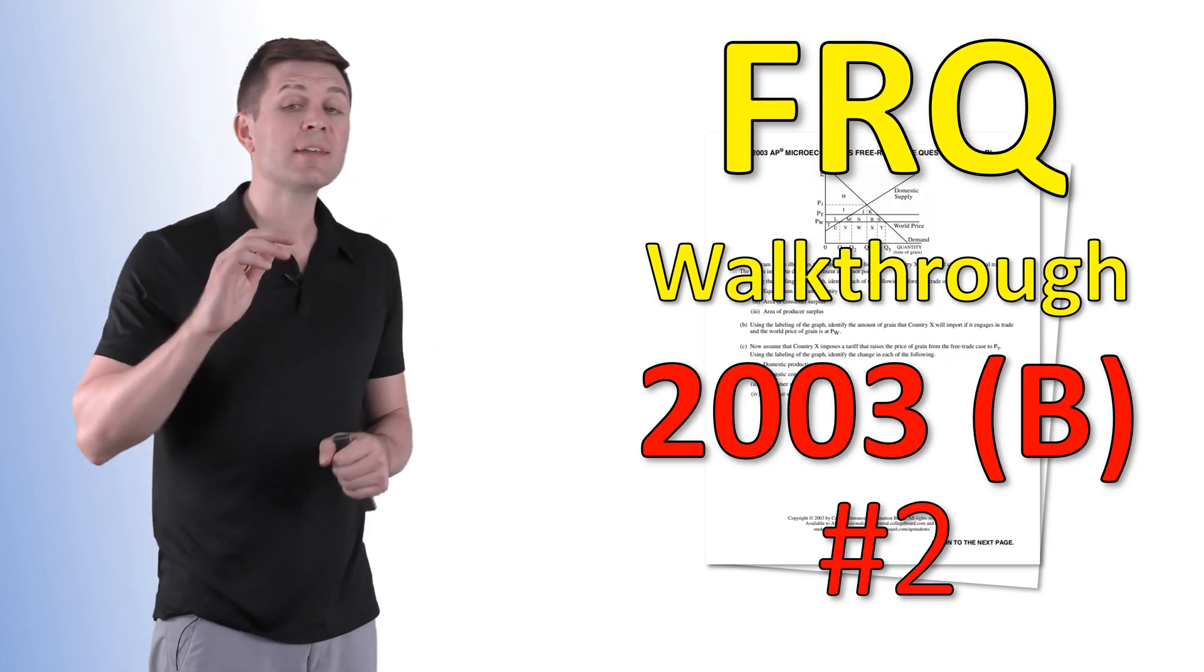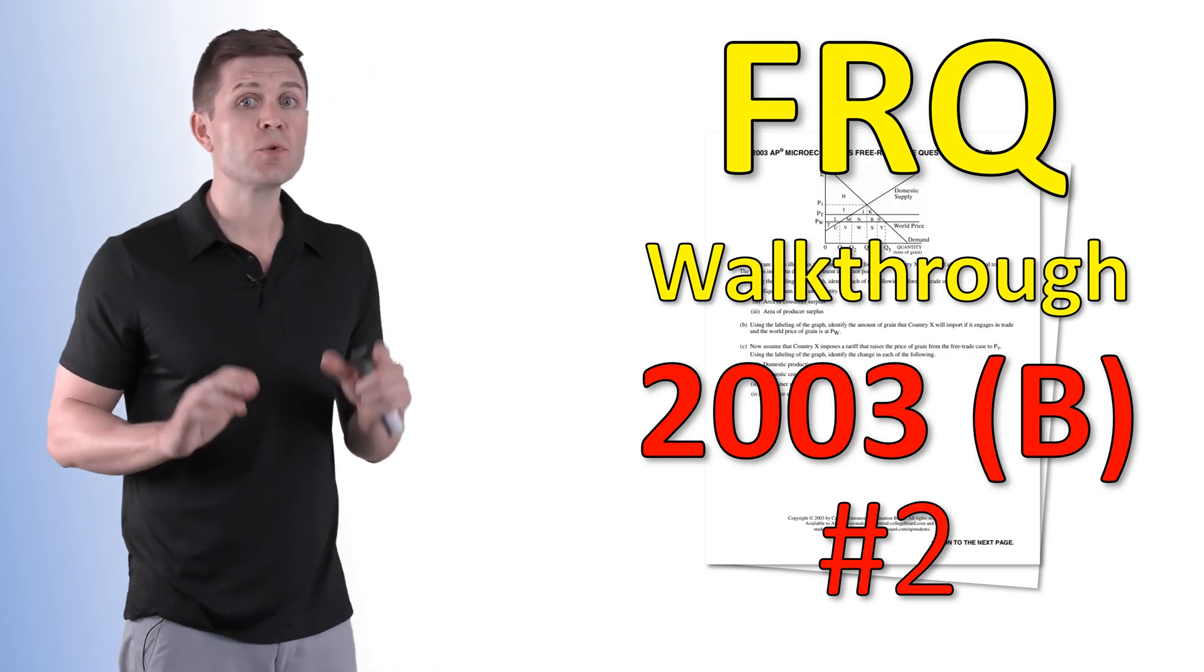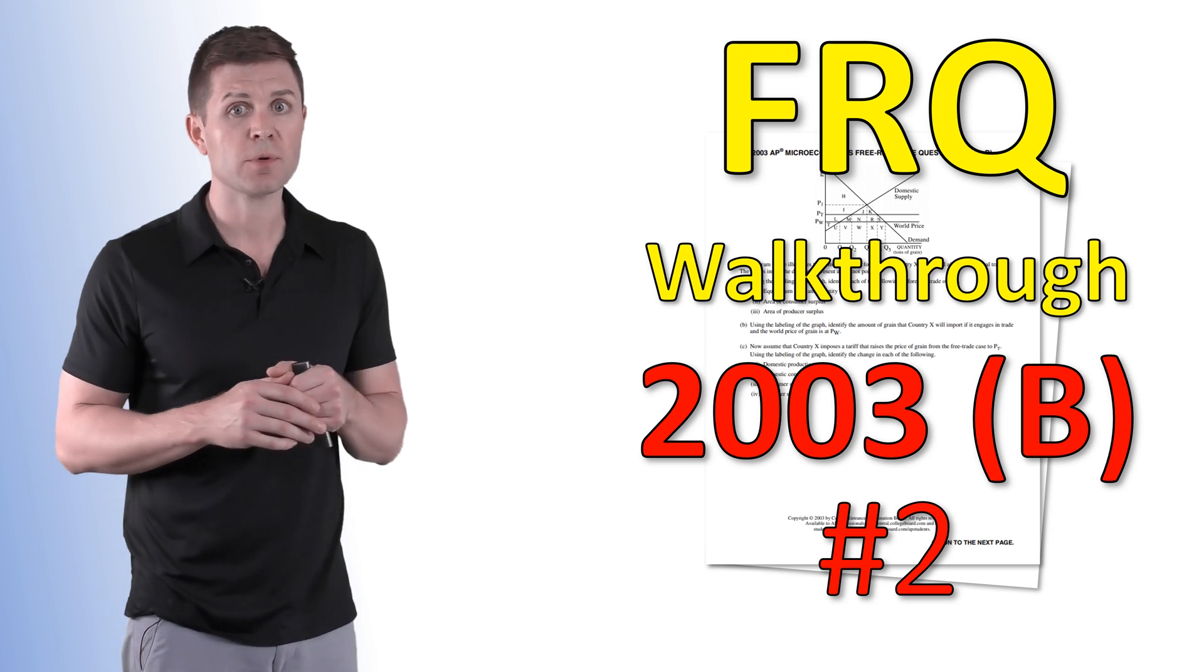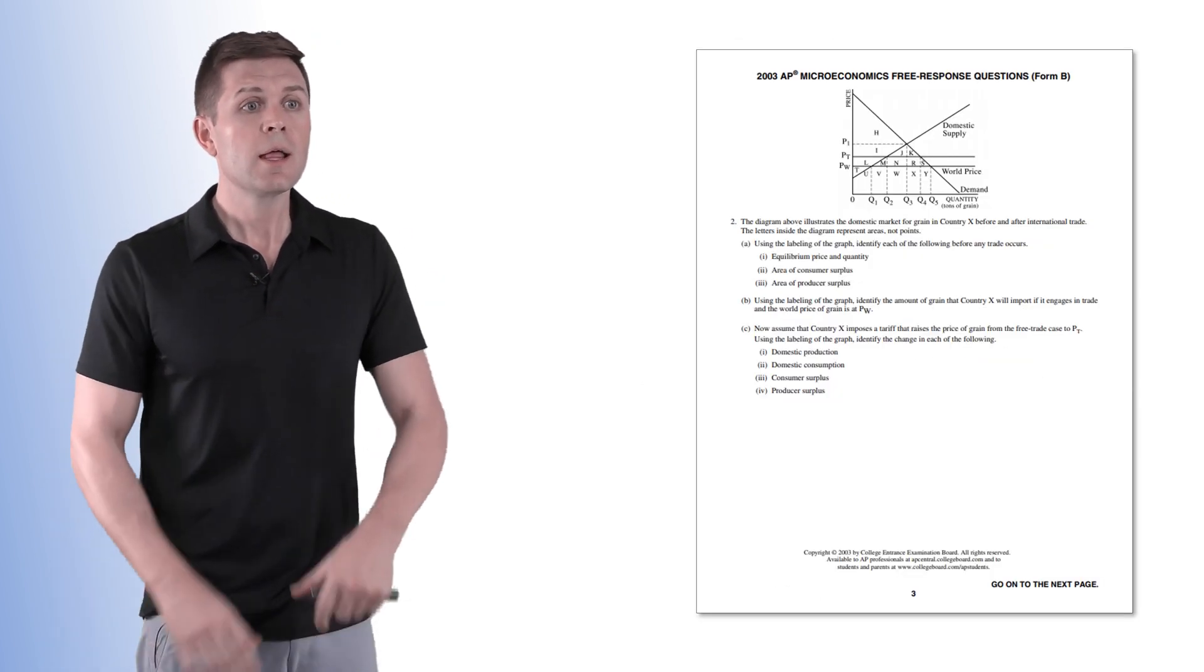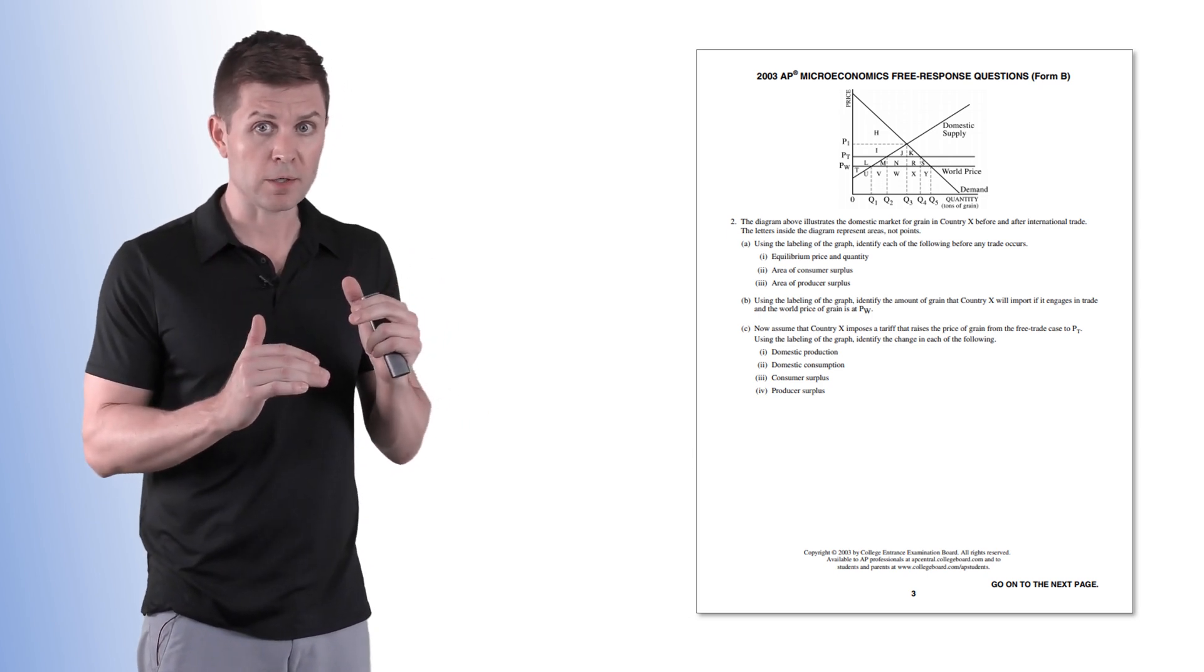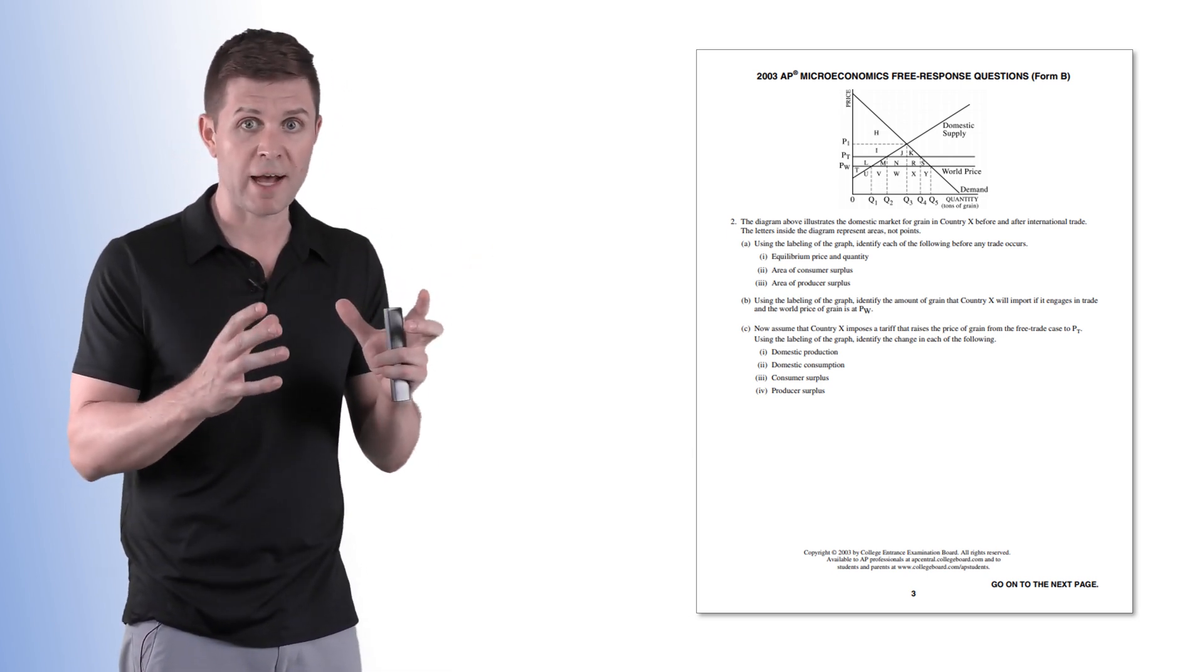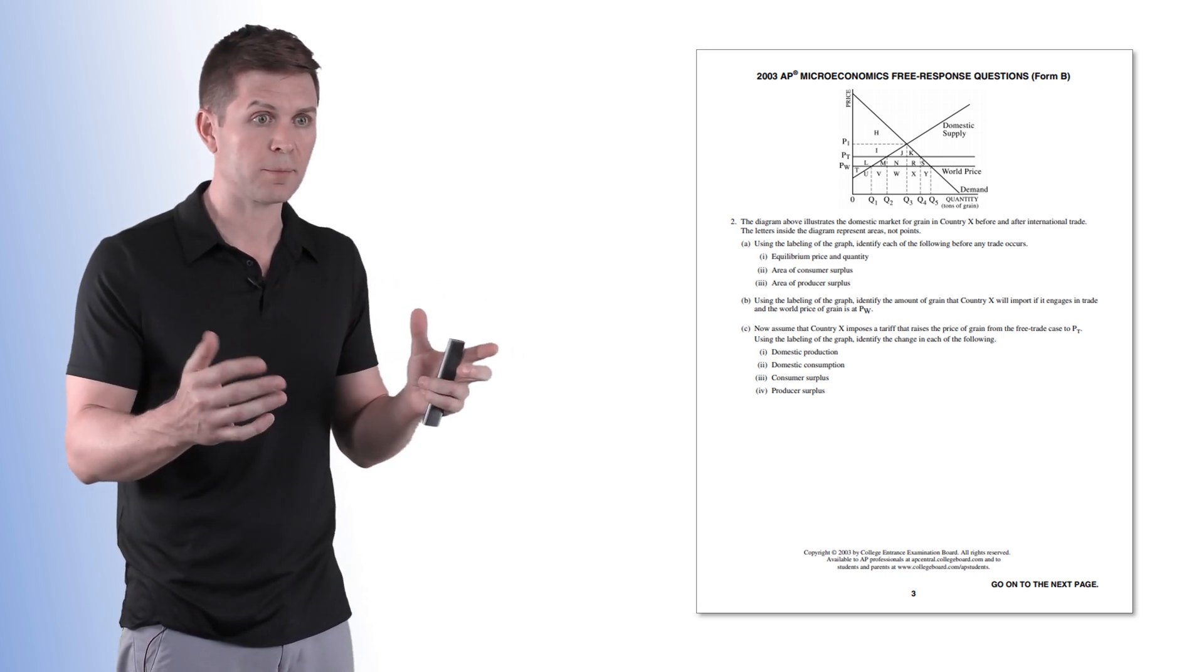Hey guys, welcome back to Econ Class. Today we're going over an FRQ from the 2003 AP micro exam. This is the B version of the test, question number two. The question is broken down into three parts. The first is asking for domestic values, consumer and producer surplus under a domestic market.